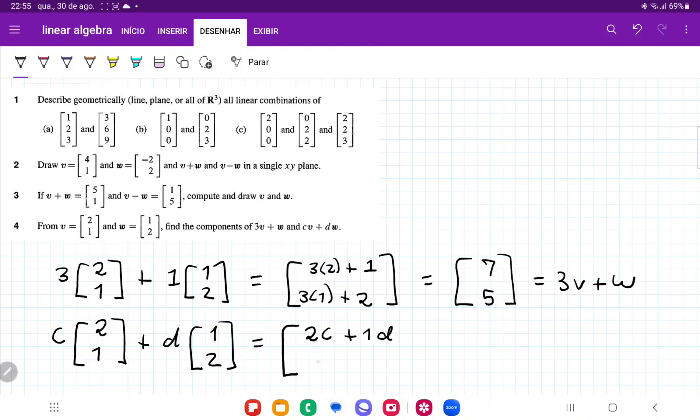And on the bottom we're going to have c plus 2d, and that is equal to cv plus dw. So that's the linear combination of v and w for generic constants c and d.